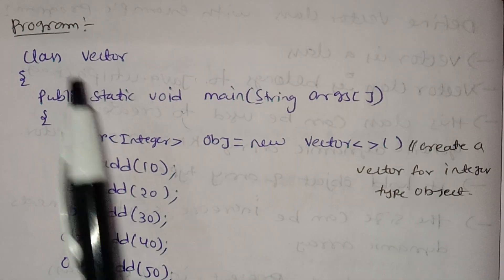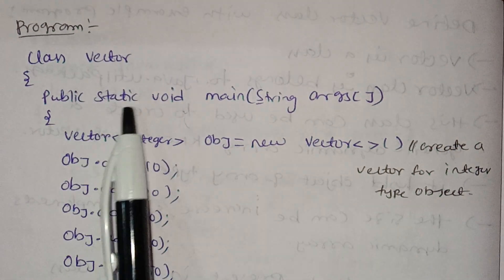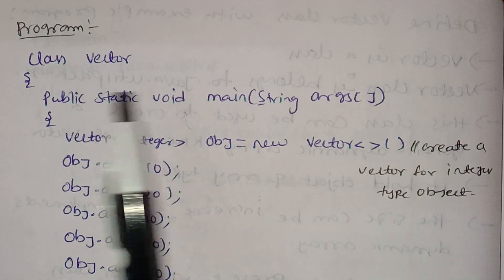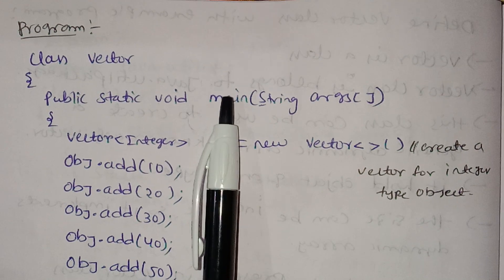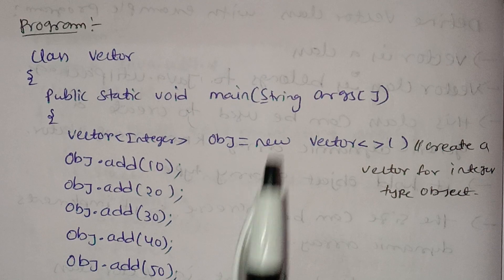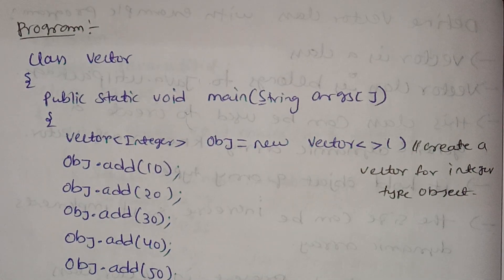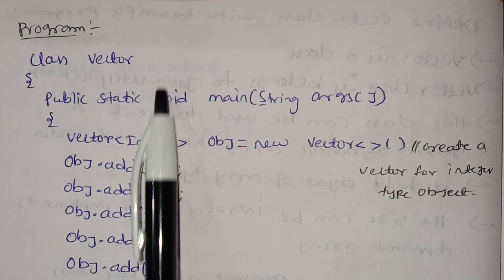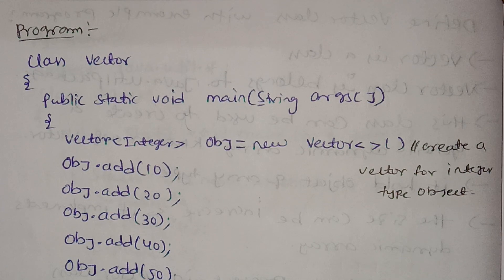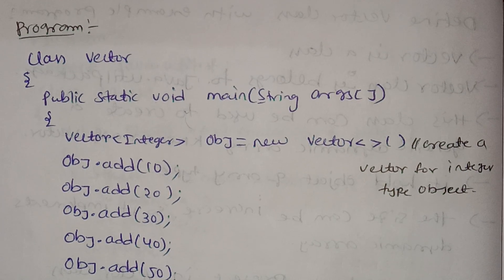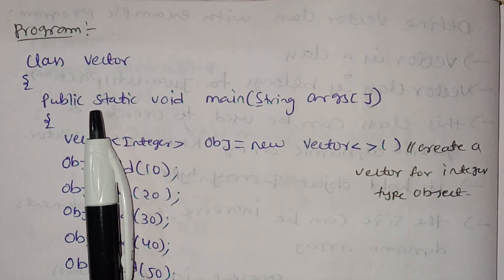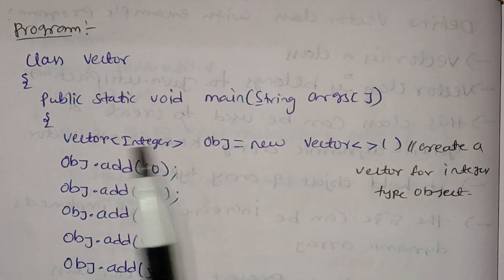Now we have a program. The class is declared, Vector is called, public static void main — the main method is called with public access specifier. The static keyword means without object creation you can directly access the program.